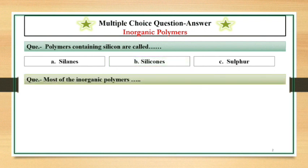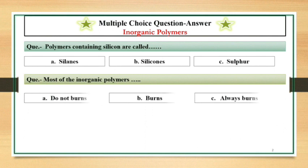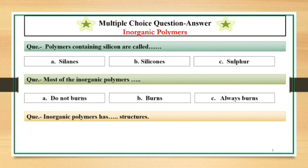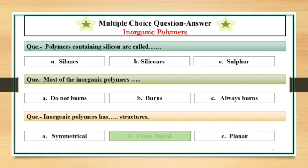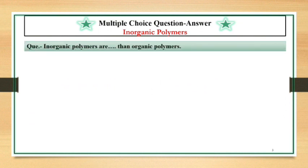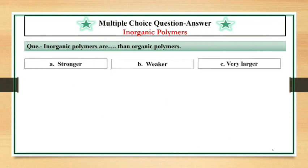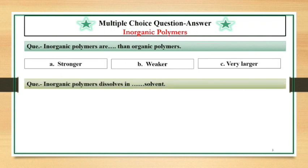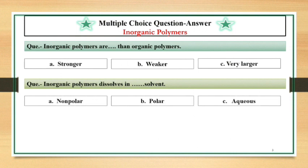Most of the inorganic polymers, dash dash, do not burn. Inorganic polymers have dash dash structures. Cross-linked. Inorganic polymers are dash dash than organic polymers. Stronger than organic polymers. Inorganic polymers dissolve in dash dash solvent. Polar solvent.